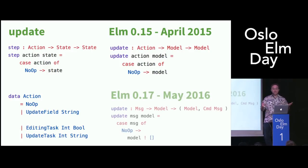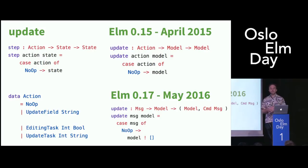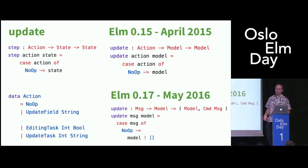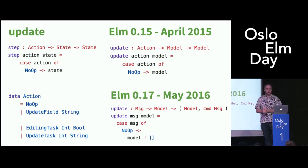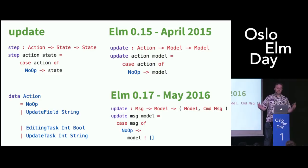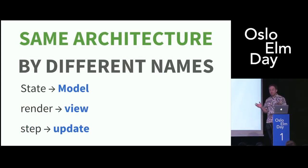Elm 0.17 was the one that took out signals. This is the first time you see commands being introduced to update — before that you just never had a thing called commands. And we also got the terminology of message instead of action. Even in 0.17, there's still stuff we don't have anymore — like that exclamation point operator at the bottom, which was basically just a little bit of sugar for returning a tuple of a command. So we can see that although things have gotten different names and the types have shuffled around a bit, fundamentally the basic idea of model, view, update with messages really has not changed since that initial TodoMVC — it's basically been the same architecture since 2014.